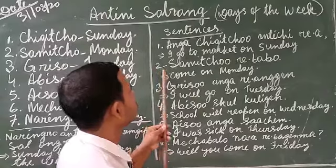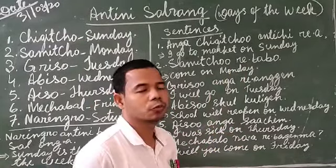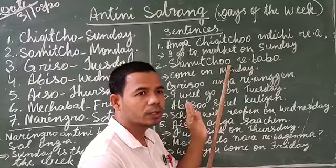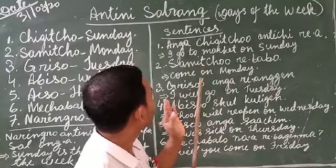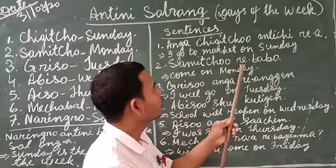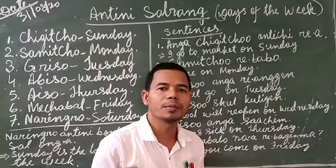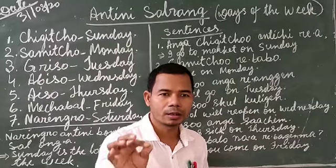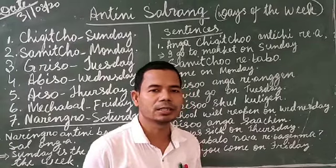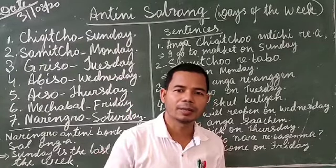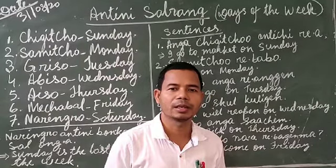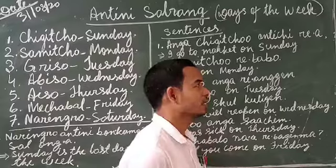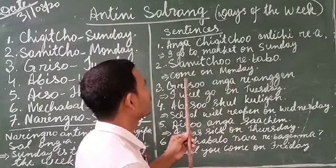Now you come to number two. Samuchoo reabao — this is only two words, very simple. Samuchoo, here also double O, that means 'on Monday.' Reabao means come. So samuchoo reabao means come on Monday. You can call someone — if you want them to come to you, you say reabao. Naari reabao means you come.